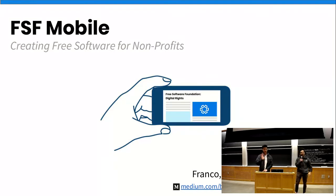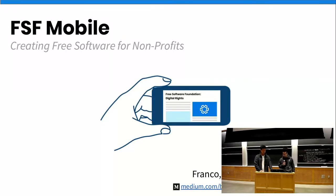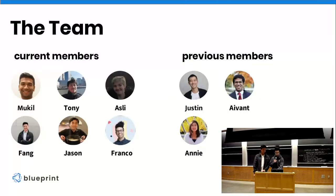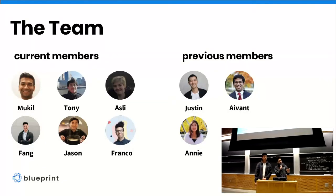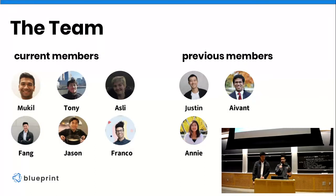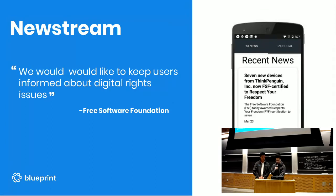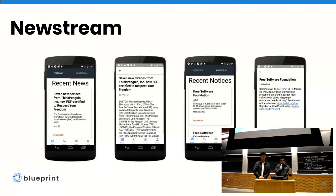My name is Franco and this is Fang — we're UC Berkeley students who've been working on a mobile application for the Free Software Foundation. We're part of Blueprint, a team of UC Berkeley students that develops software pro bono and promotes technology for social good. For the FSF we had multiple problems to solve. One component we built is the news stream, incorporating the FSF news RSS feed and GNU Social into the application.